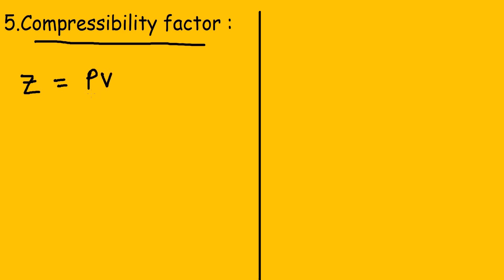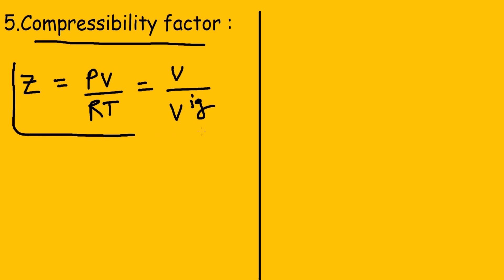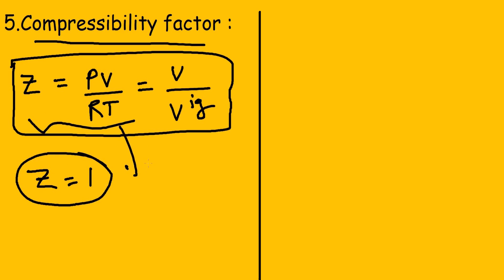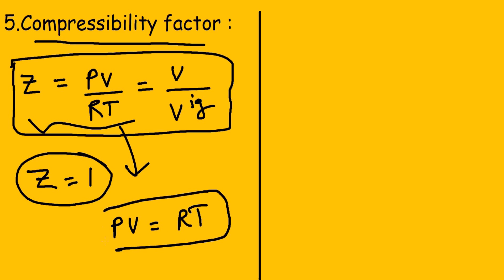The fifth point is based on the compressibility factor. The compressibility factor is a dimensionless ratio denoted by Z, defined as Z equals PV/RT, or equivalently as the actual volume divided by the ideal gas volume. For an ideal gas, the compressibility factor is always equal to one — if Z equals one, then PV equals RT, which is the ideal gas equation of state.